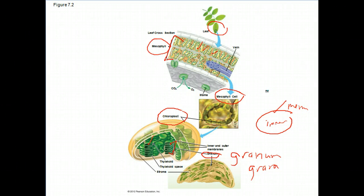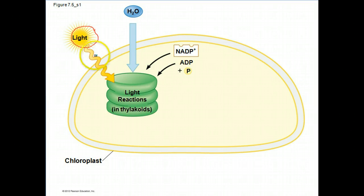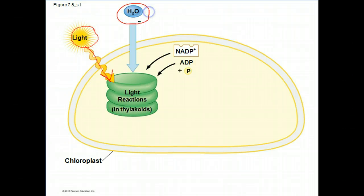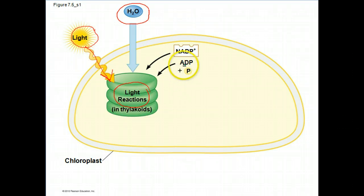Looking at this process in more detail, the summary has been pretty important as well. Light is obviously going to be important for photosynthesis — light's going to cross through all those layers and basically hit the thylakoid membranes. Water's going to be important for this process too. Overall, the light reactions of photosynthesis are going to recharge NADP+, which is essentially an empty electron carrier, and also recharge ADP.